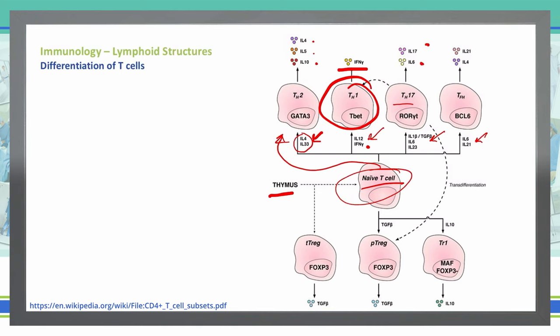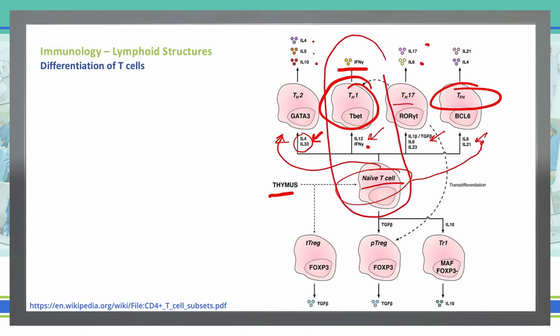Finally, if the naive T cell comes into contact with IL-6 and IL-21, it can become a TFH cell, which gives off IL-4 and IL-21. To focus on one key pathway: the naive T cell becoming a T-helper 1 cell gives off interferon gamma.